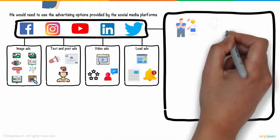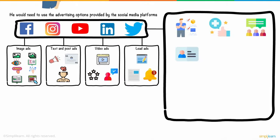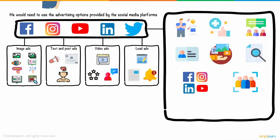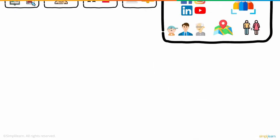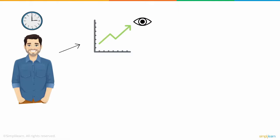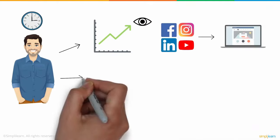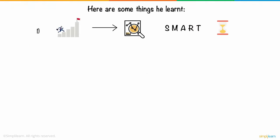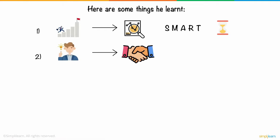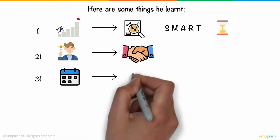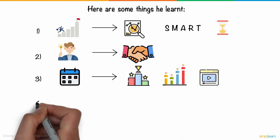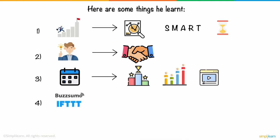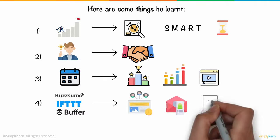Phil could also create a brand for himself, drive audience interest, engage with them, and find content that works. Social media platforms allowed him to target audiences based on demographics like age, location, and gender. He began to see an increase in viewers and blog traffic, and more people buying his book. He learned to set SMART goals, understand his audience, maintain a social media calendar, and use tools like BuzzSumo, IFTTT, and Buffer for lead generation.